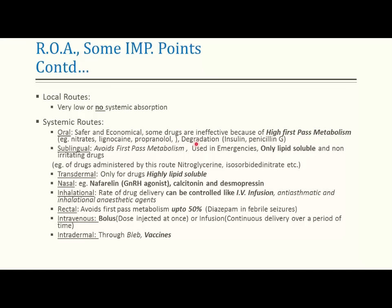The sublingual route avoids first-pass metabolism and is mainly used in emergency conditions. Only lipid-soluble and non-irritating drugs can be administered sublingually. Examples are nitroglycerin and isosorbide dinitrate, used in emergency conditions like cardiac ischemia.